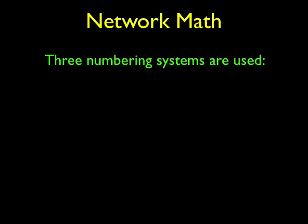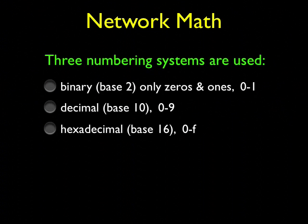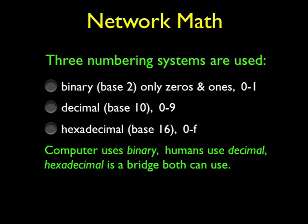Three numbering systems are used in networking. Computers understand only the binary system, base 2, which just uses the numbers 0 and 1. We humans are most comfortable with decimal, base 10, the numerals 0 to 9. And midway is the hexadecimal number system, base 16, using numbers 1 to 9 and then A through F to take it up to base 16. The computer understands binary, humans use decimal, and hexadecimal is a bridge that both can use.